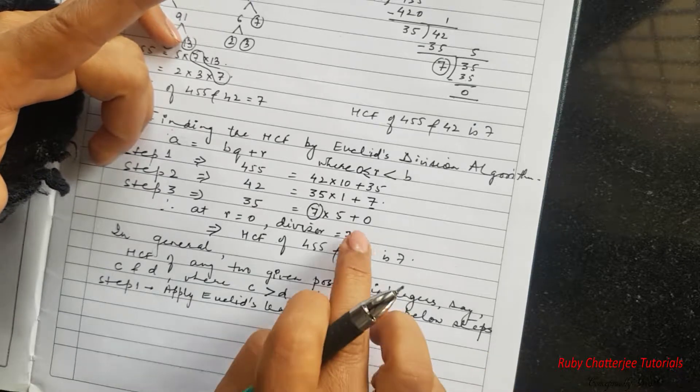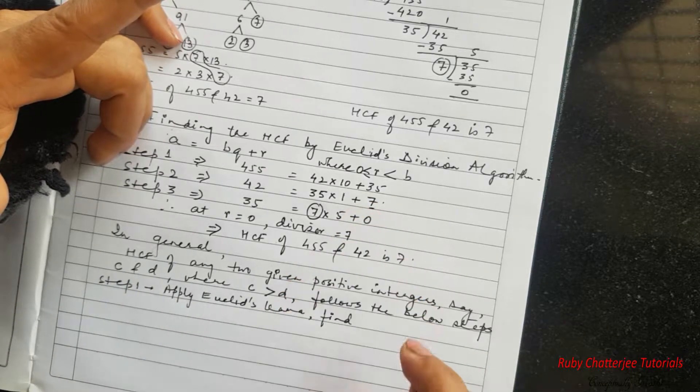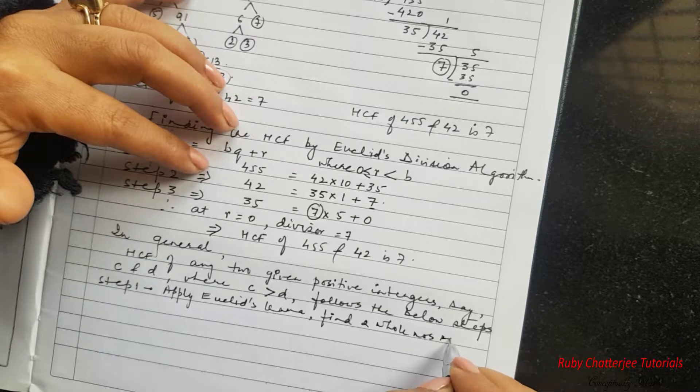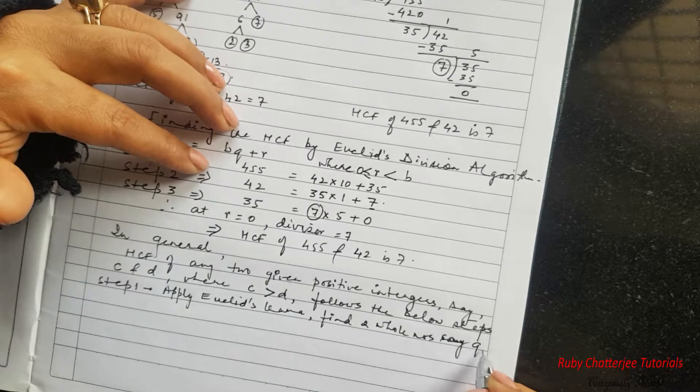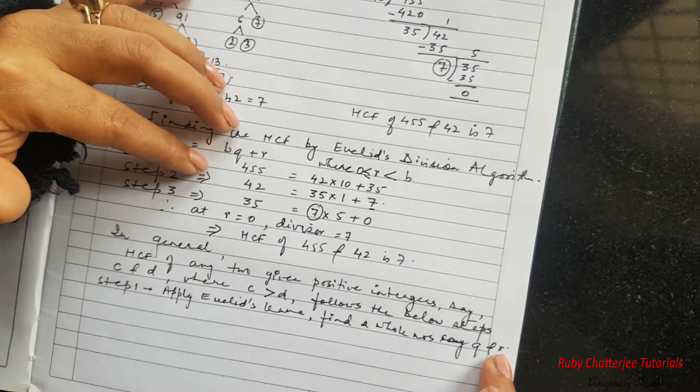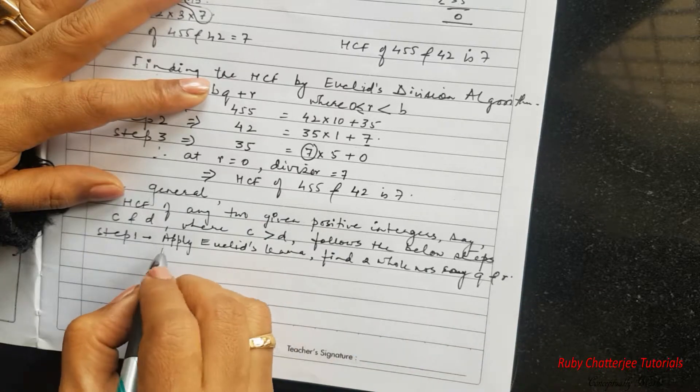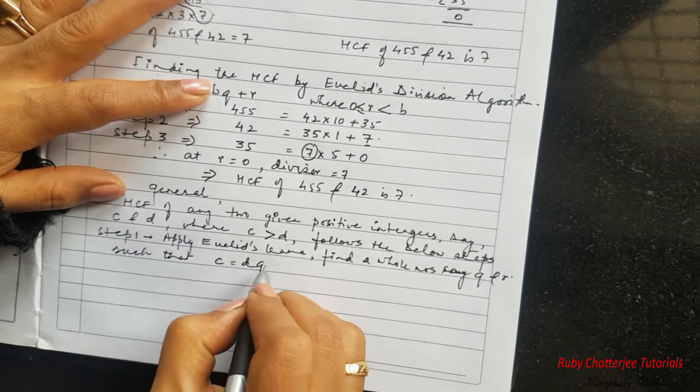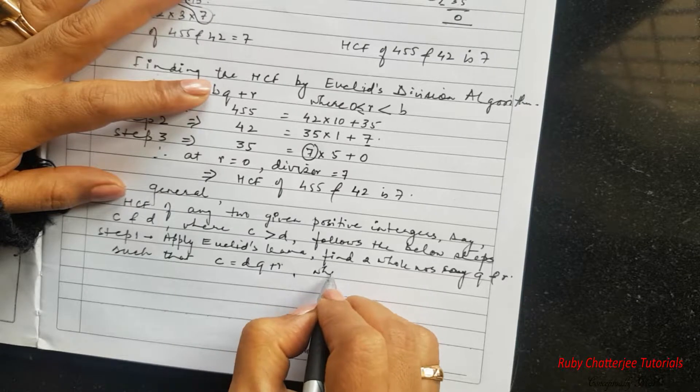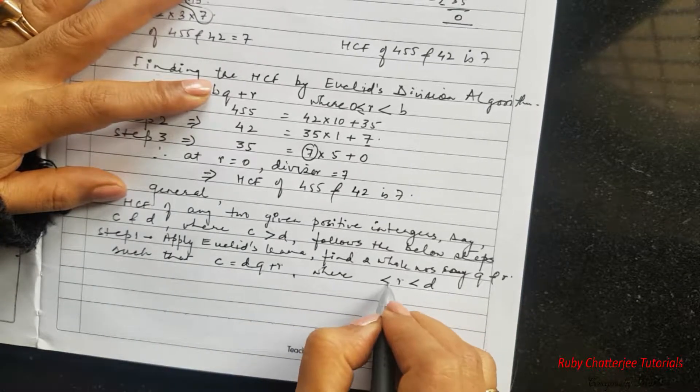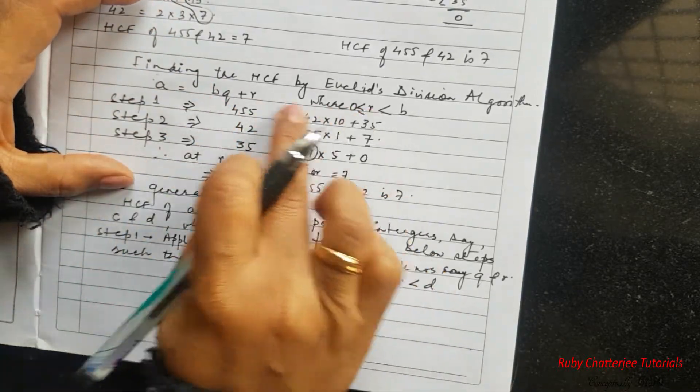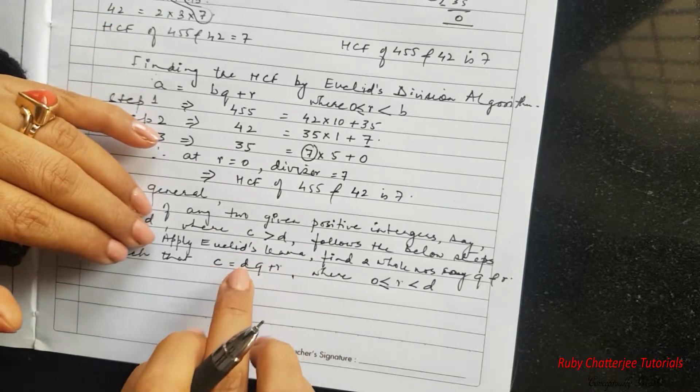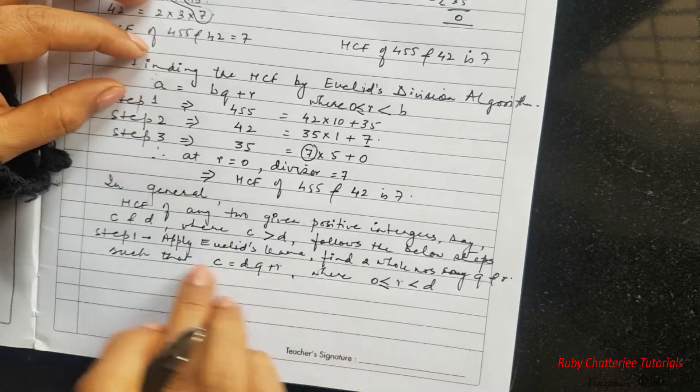So in this first step, step 1, we apply Euclid's Lemma and find two whole numbers. Why did I say whole numbers? Because we are also looking for a 0 as the remainder. So we find two whole numbers say Q and R, where R is the remainder, such that C is equal to DQ plus R where R is smaller than D and greater than or equal to 0. Same as the statement of Euclid's Lemma, just that in this case we have a different value for A and B.